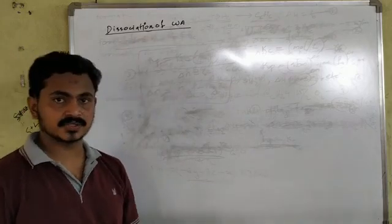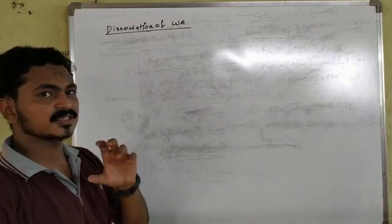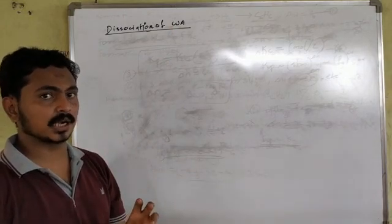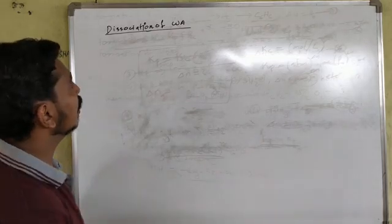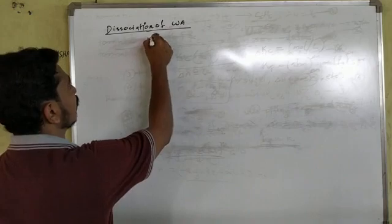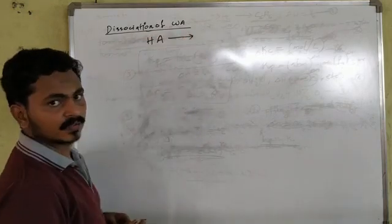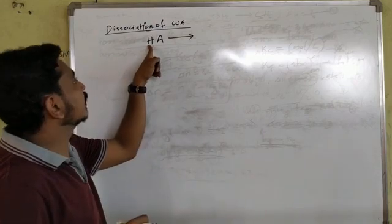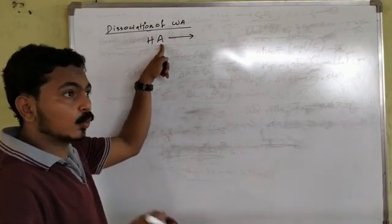Dissociation of weak acid. In a weak acid, we can see H plus and Y minus. What is the weak acid? I have a weak acid. I am going to say that H-A. H-A is an acid. It is not hydra, it is not just H. A is a counter-ion.